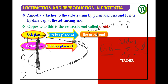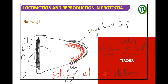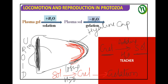Gelation takes place at the anterior advancing end. What is gelation? The conversion of the Sol into gel — by losing water. The conversion of plasma gel into Sol is called solation; the conversion of Sol into gel is called gelation, which leads to the formation of pseudopodium.